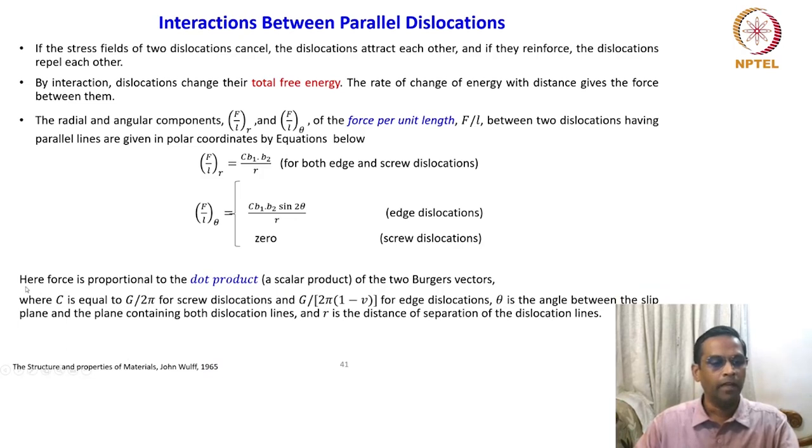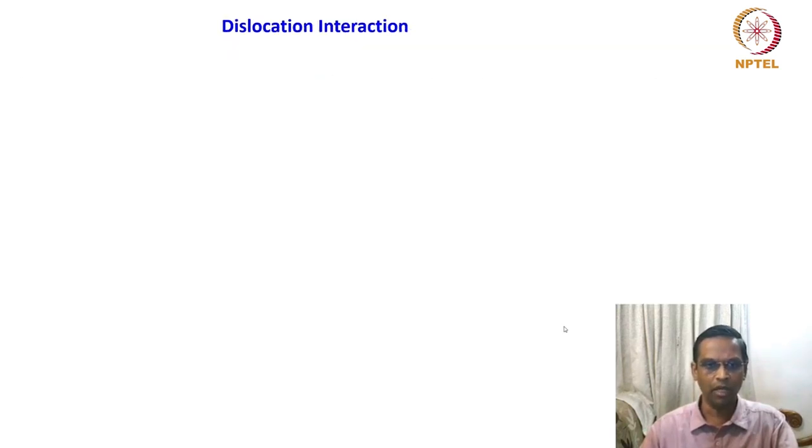What is C here? As we mentioned in the previous class, the force is proportional to the dot product because we assume that it is confined to a single plane. C is a constant which is equal to G/(2π) for screw dislocation and G/(2π(1-ν)) for edge dislocation. We have enough background to recognize these elastic constant modifications because of the plane problems we already mentioned. θ is the angle between the slip plane and the plane containing both dislocation lines; r is the distance of separation of the dislocation lines.